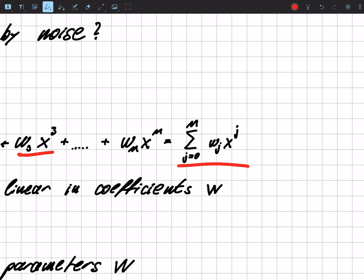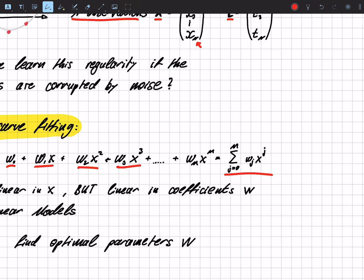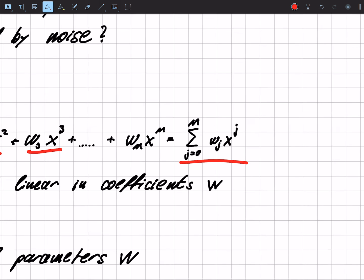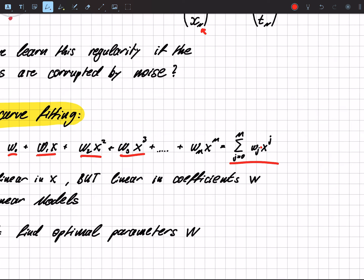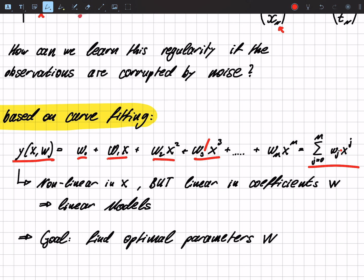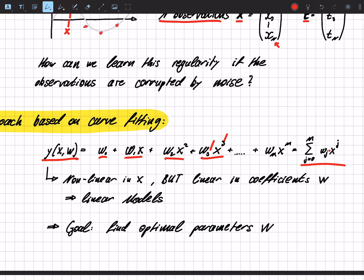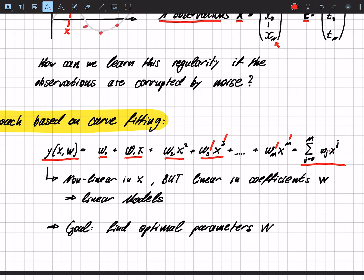Then we have w2, it's the quadratic and then cubic and so on. And we can write this in a compact form. So we have a sum that goes from 0 to m, m is our degree of the polynomial times x to the power of j.